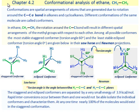In this section, we will deal with the conformational analysis of some simple organic molecules, beginning with ethane. Conformations are spatial arrangements of atoms that are generated due to rotation around the C-C sigma bond in alkanes and cycloalkanes. Different conformations of the same molecule are called conformers.